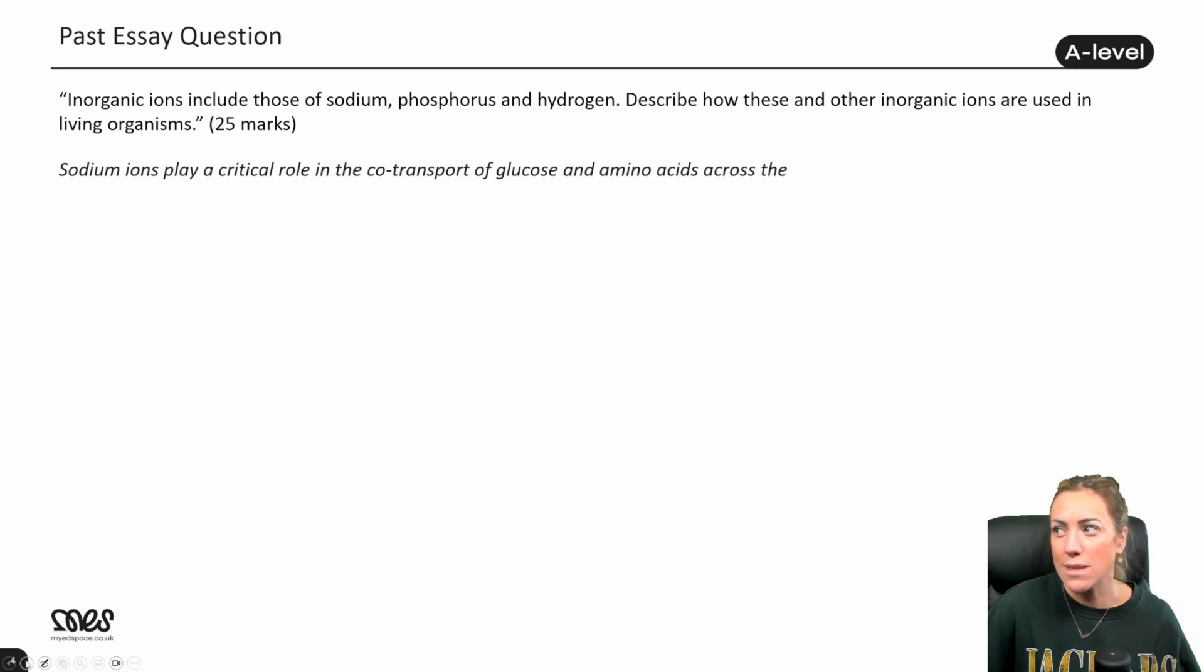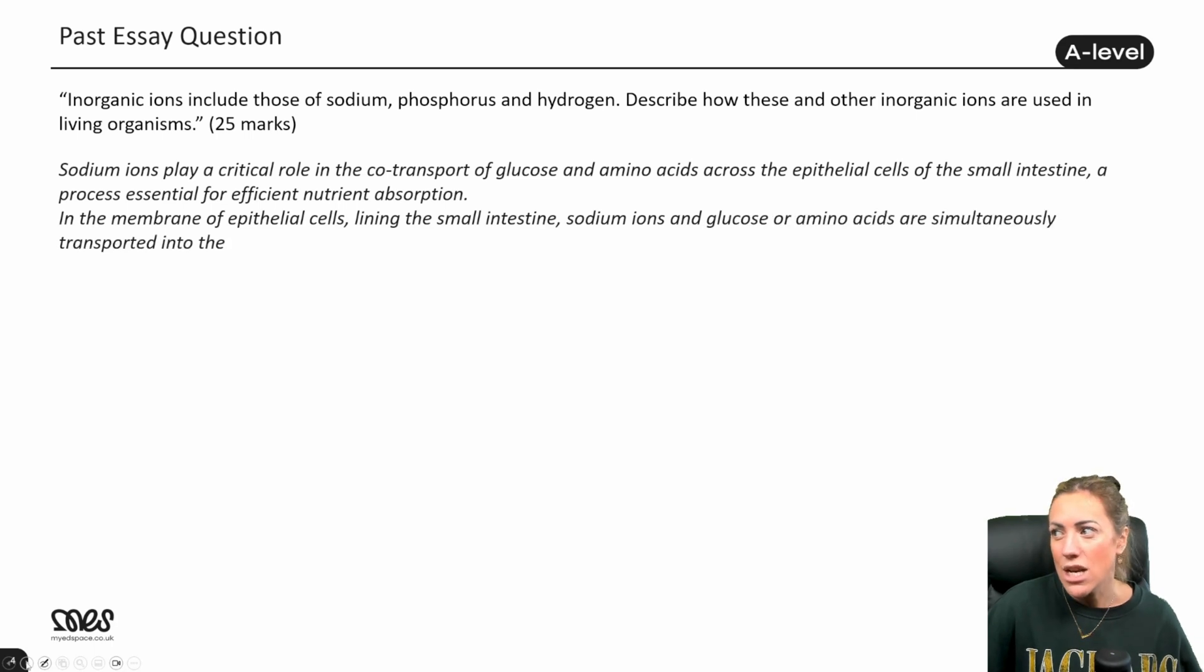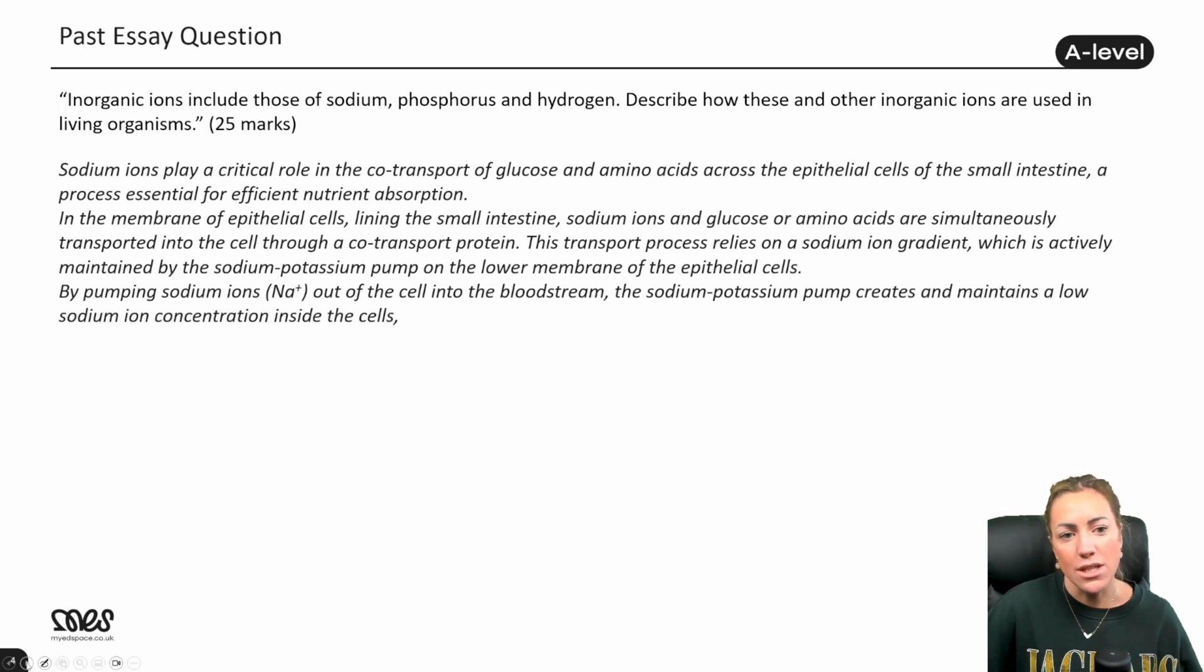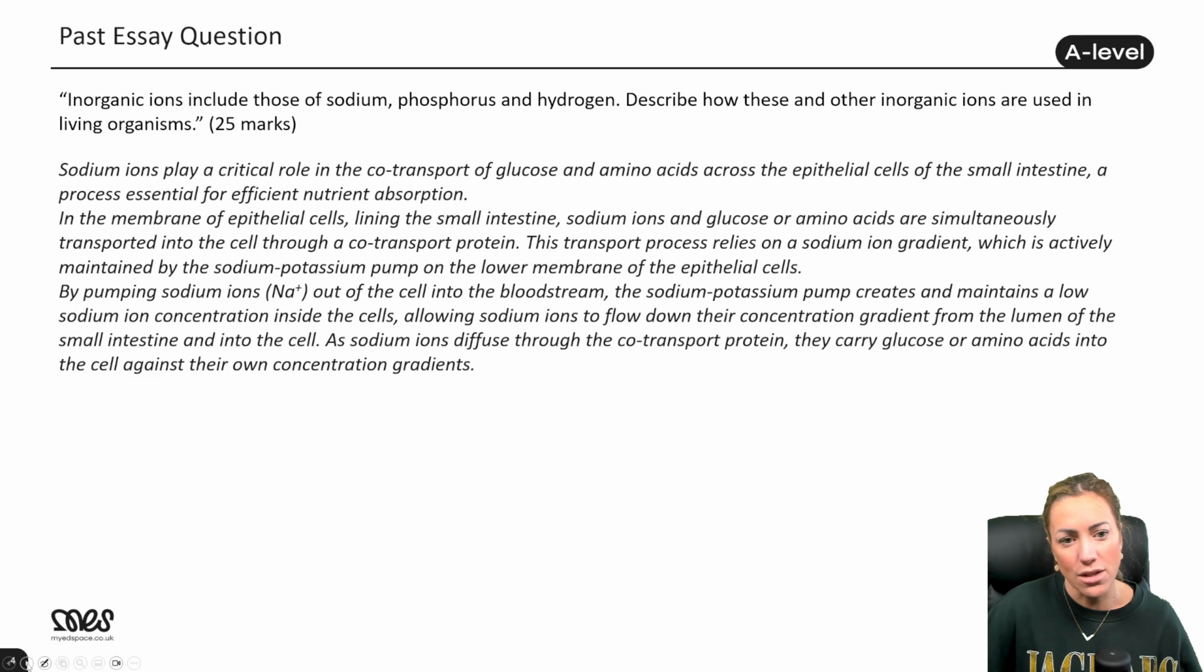Sodium ions play a critical role in the co-transport of glucose and amino acids across the epithelial cells of the small intestine, a process which is essential for efficient nutrient absorption. In the membrane of the epithelial cells lining the small intestine, sodium ions and glucose or amino acids are simultaneously transported into the cell through a co-transport protein. This transport process relies on a sodium ion gradient, which is actively maintained by the sodium potassium pump on the lower membrane of the epithelial cells. By pumping sodium ions (Na+) out of the cell into the bloodstream, the sodium potassium pump creates and maintains a low sodium ion concentration inside the cells, allowing sodium ions to flow down their concentration gradient from the lumen of the small intestine and into the cell. As sodium ions diffuse through the co-transport protein, they carry glucose or amino acids into the cell with them against their own concentration gradients.